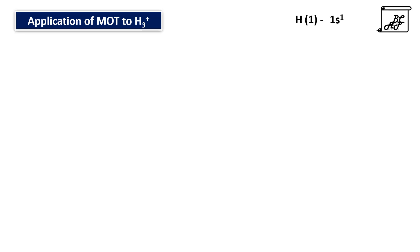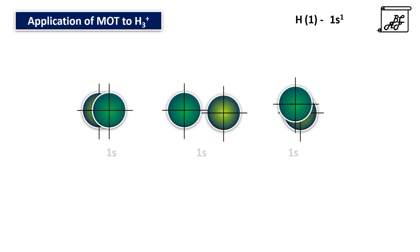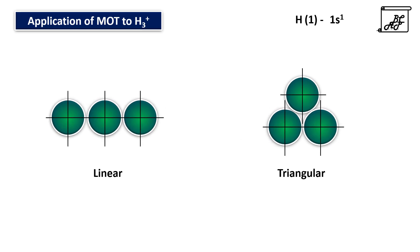Now let's apply molecular orbital theory to study the structure of trihydrogen ion. Hydrogen has atomic number 1 and its electronic configuration is 1s1. To study trihydrogen ion, we need to consider 3 hydrogen atoms with their 1s orbitals. There are two possibilities: either this trihydrogen ion can be linear or it can be triangular, and we have to understand this by application of molecular orbital theory.